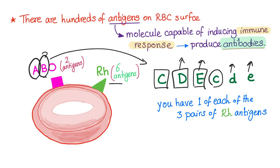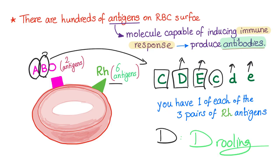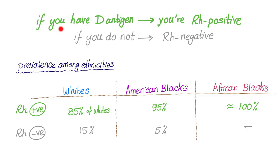The most common of these antigens is D. There is a mnemonic: D is drooling — it's all over the place. So if you have the D antigen, you are an RH positive person. If you do not have the D antigen, you are called RH negative.